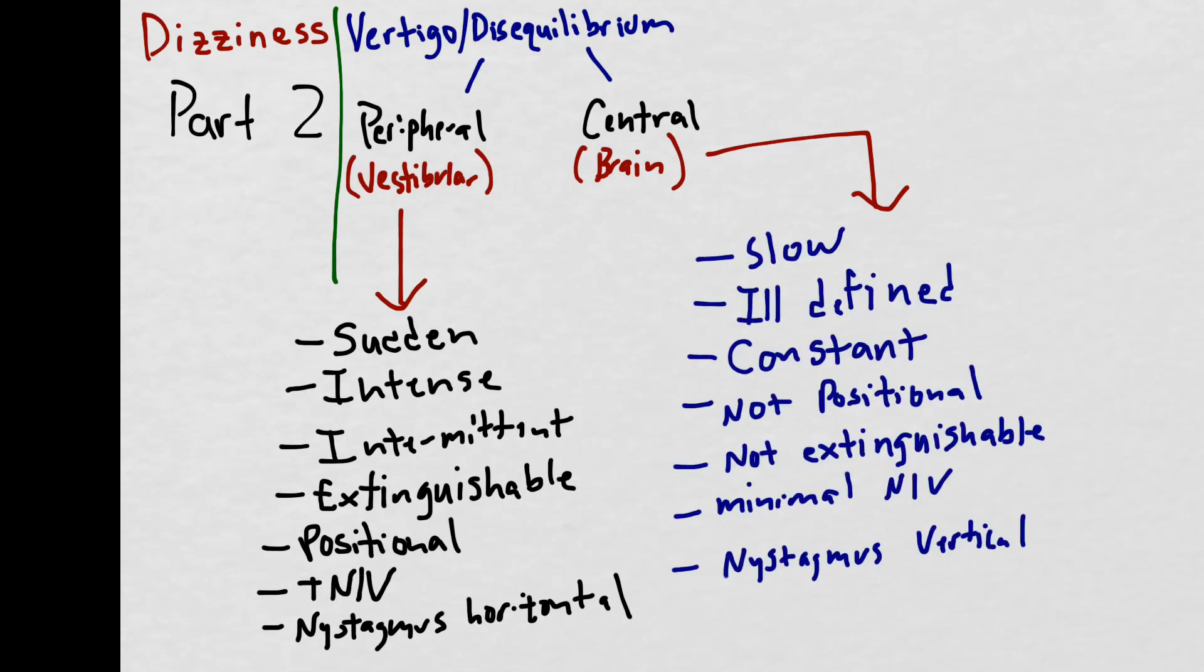Whereas central vertigo is defined by slow onset or an ill-defined sensation of dizziness, room spinning or feeling like you're drunk. The sensation is constant, doesn't ever extinguish, doesn't really change with position. The patients actually look pretty well and have no or minimal nausea and vomiting. And the nystagmus can be vertical, it could be bi-directional horizontal nystagmus, just anything other than unidirectional horizontal nystagmus.